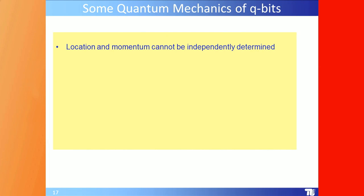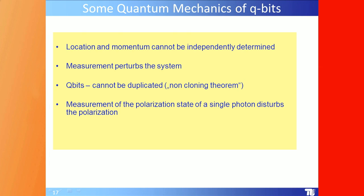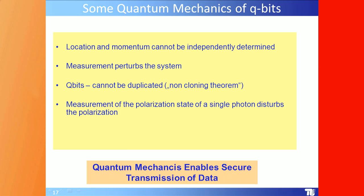Some quantum mechanics: position and momentum cannot be independently determined — a measurement perturbs the system, going back to the 1920s. Qubits cannot be duplicated — electrical engineers invented a new name for that: the no-cloning theorem. Measurement of the polarization state of a single photon disturbs or destroys that polarization. Essentially, it is quantum mechanics that enables secure transmission of data.